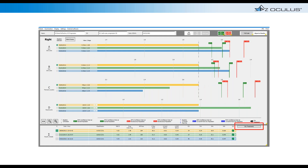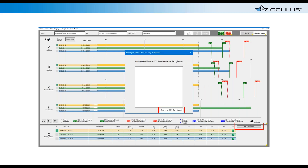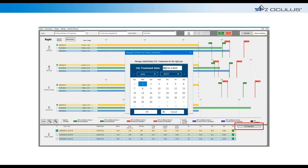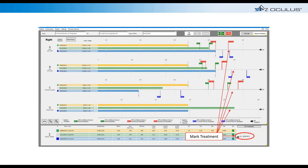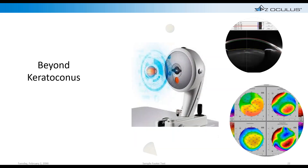To add a cross-linking treatment in the software, you hit 'Add New Cross-Linking Treatment' and type in the date. Once you do that, the blue gates appear. As soon as an examination is recorded 12 months after the date of cross-linking, those exams will appear on the graph.